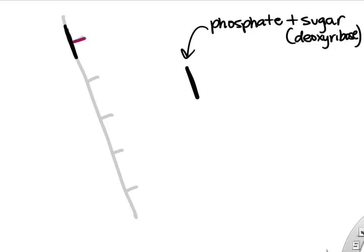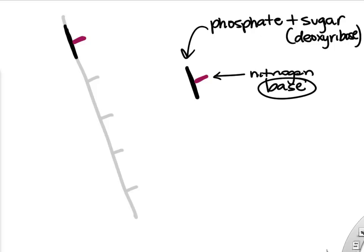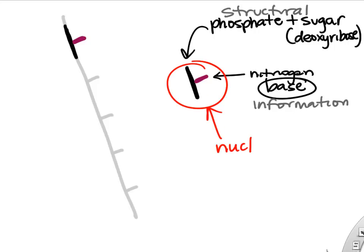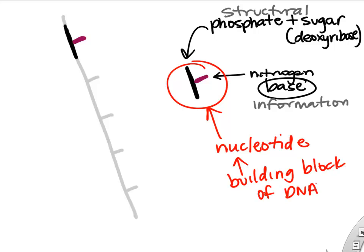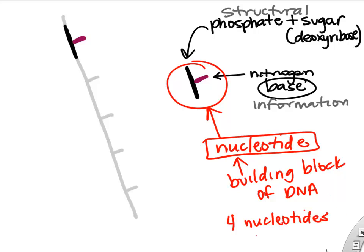The sugar for DNA is deoxyribose. Sticking off, making the rung of the ladder, is a nitrogenous base. The phosphate and sugar are structural, whereas the base is more for information. Together, that molecule makes up the building block of DNA and RNA, called a nucleotide. That's what forms the ladder — our nucleotides.